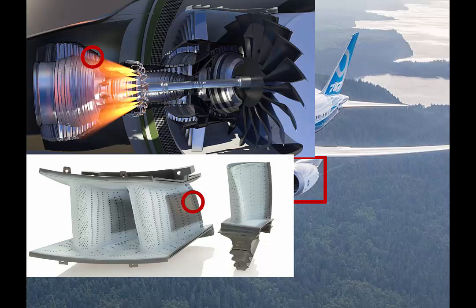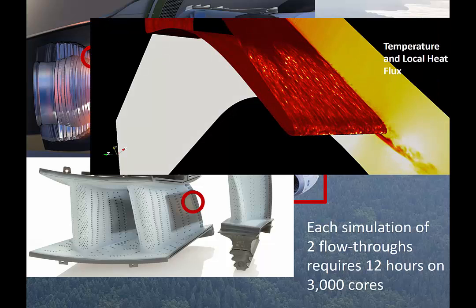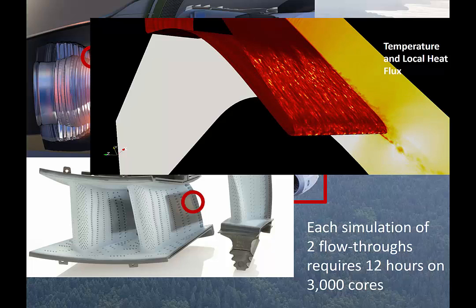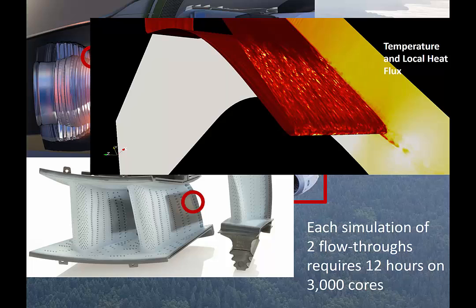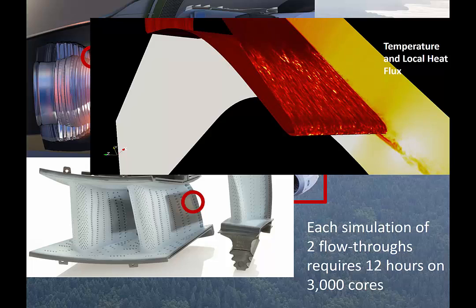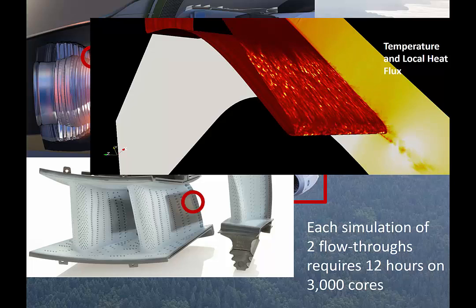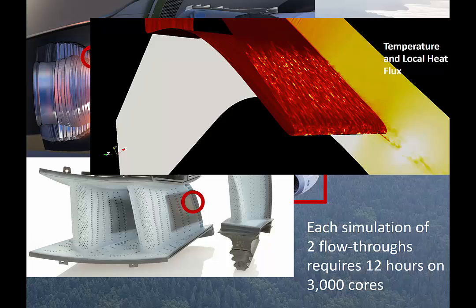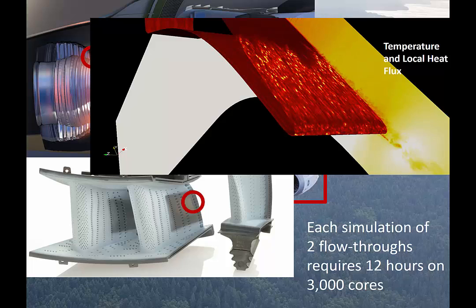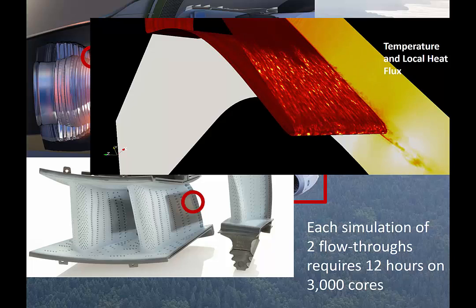For example, if you zoom into the trailing edge of the turbine blade — which is a small part of the whole engine, which is a small part of the whole airplane — the simulation looks like that. This is a solution of a partial differential equation that governs the fluid flow of the hot gas going through the trailing edge of the turbine. Through that, people can predict how much heat is going into the turbine blade and what is the maximum temperature on the blade, and whether the blade can sustain that temperature under the given stress, which is also simulated numerically.